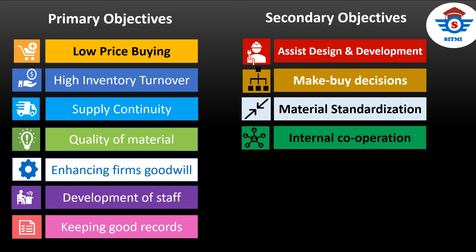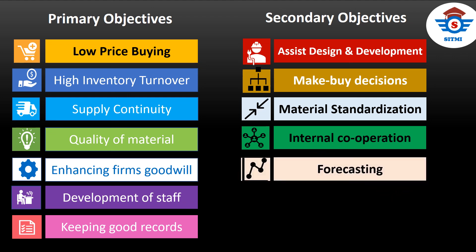The next secondary objective is to cooperate with internal departments. While materials management teams deal with external parties, they also work within the organization with departments like customer service, production, finance, and engineering. It is required to have good understanding, collaboration, and coordination with both external and internal parties. The last objective is forecasting — it is always important to manage future demands, and hence beneficial to forecast on a timely basis.